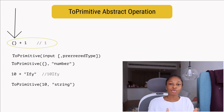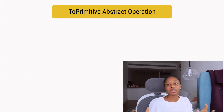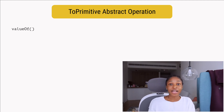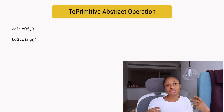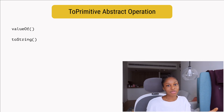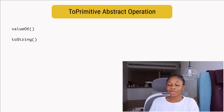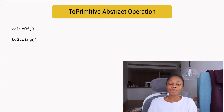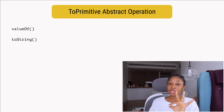There are two methods available on every object that are used to convert it to a primitive. The first one is valueOf, which retrieves whatever primitive value is associated with that object. The second one is toString, which is used to convert the object to a string representation.